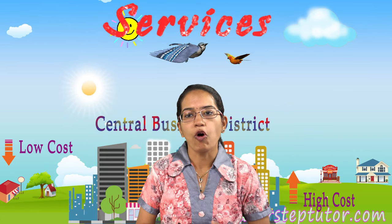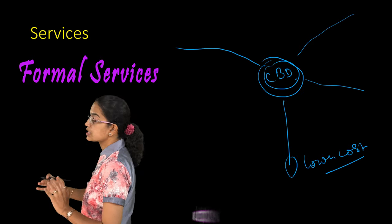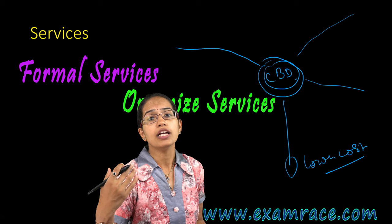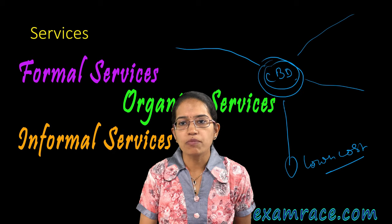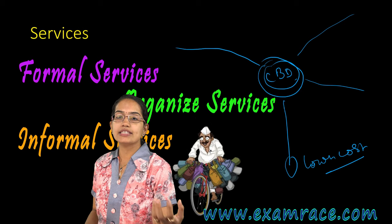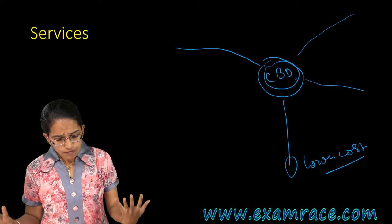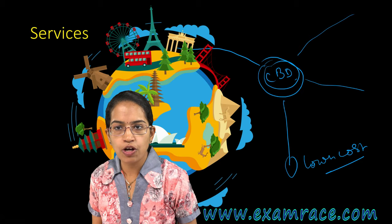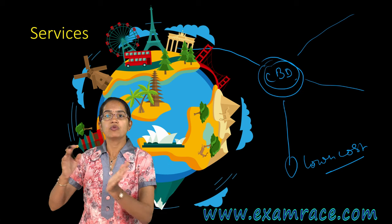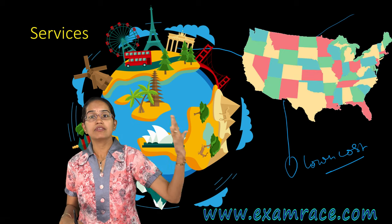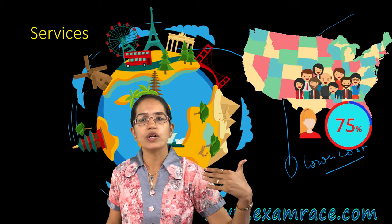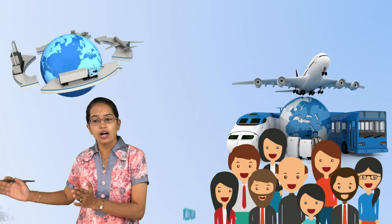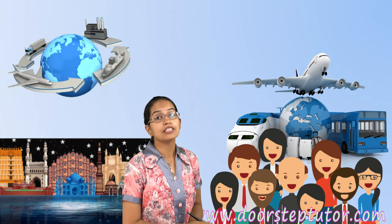Services could be formal, meaning organized, or informal and unorganized. A very good example of an informal service is the Dabbawala. In the global scenario, services are fast evolving. India was predominantly agriculture-based, but has been moving to services. In America, nearly 75% of the people are involved in the service sector economy, showing a shift in the economic front across countries.